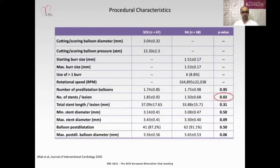From 278 lesions included in the trial, 14 lesions crossed over from scoring/cutting balloon to rotational atherectomy in the bifurcation group. The scoring/cutting balloon group included 47 lesions in 43 patients, and the rotational atherectomy group had 68 lesions in 61 patients. Baseline characteristics were comparable between the two groups, with more prior myocardial infarction in the scoring/cutting balloon group. Mean age was 75 years. Lesions were mainly in the LAD; true bifurcation was 49% in scoring/cutting balloon versus 43% in rotational atherectomy group.